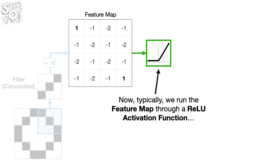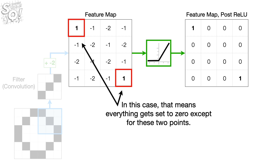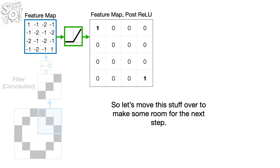Typically, we run the feature map through a ReLU activation function, and that means that all of the negative values are set to zero, and the positive values remain the same as before. In this case, that means everything gets set to zero except for these two points. So let's move this stuff over to make some room for the next step.